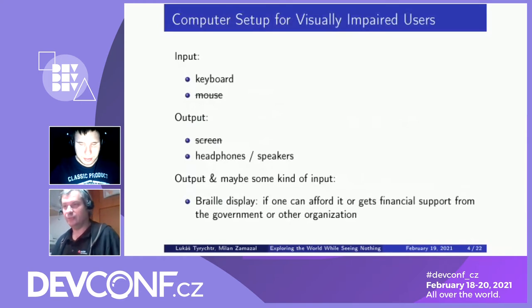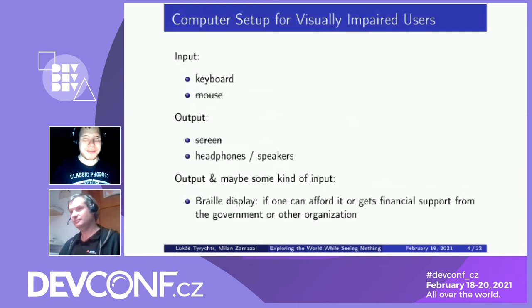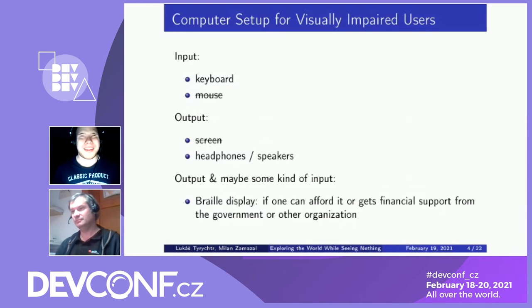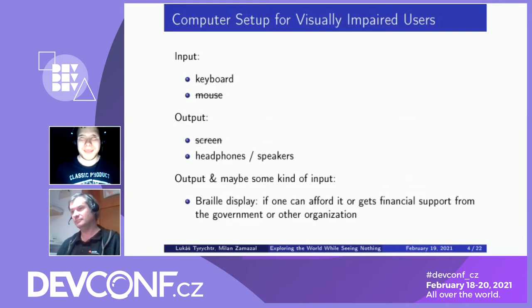So what kind of hardware do you basically need to use a computer? Well, first I need a keyboard, but then I need some speakers or headphones as well. And if everything is interesting and nice, I can have a Braille display, which is basically a device which can show you part of the text in Braille. That can be useful, for example, when doing some math exams, spell checking, programming, and things like that.